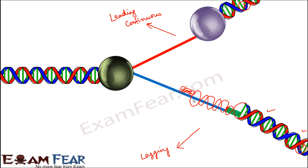That is how you get a bigger strand and that is how the entire synthesis takes place on the lagging strand. In discontinuous synthesis, the synthesis takes place in a direction opposite to the direction of growth of the replication fork, and it happens in smaller fragments. That is why it is called discontinuous synthesis.